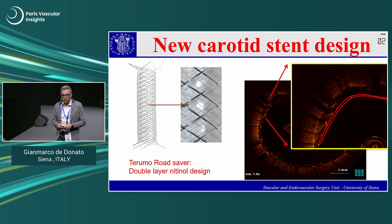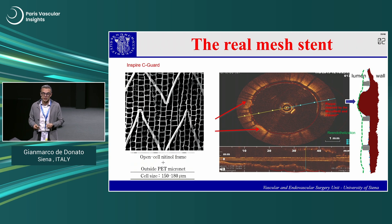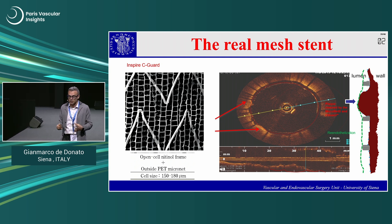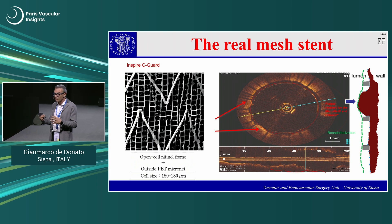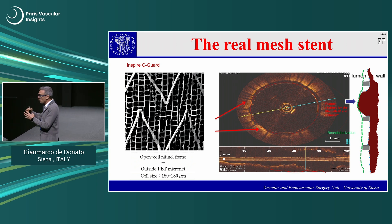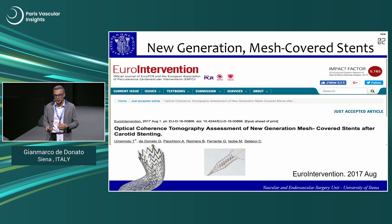With OCT, we analyzed the Terumo RoadSaver and the double-layer design, and the InspireMD CGuard — what I call the true real mesh stent — with a micronet PET mesh and a very small cell size of just 150–180 microns. We see a very smooth surface, nice plaque coverage, and the micronet containing the majority of prolapse.